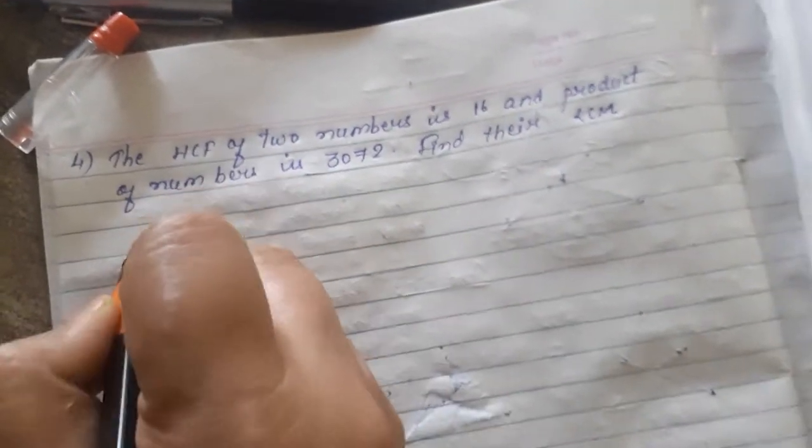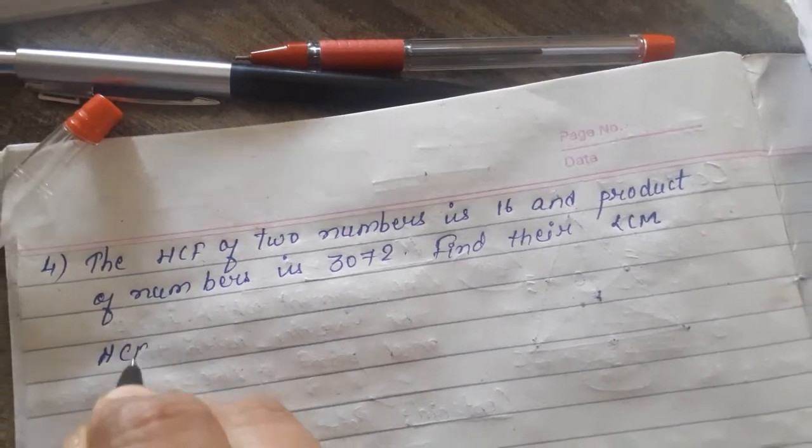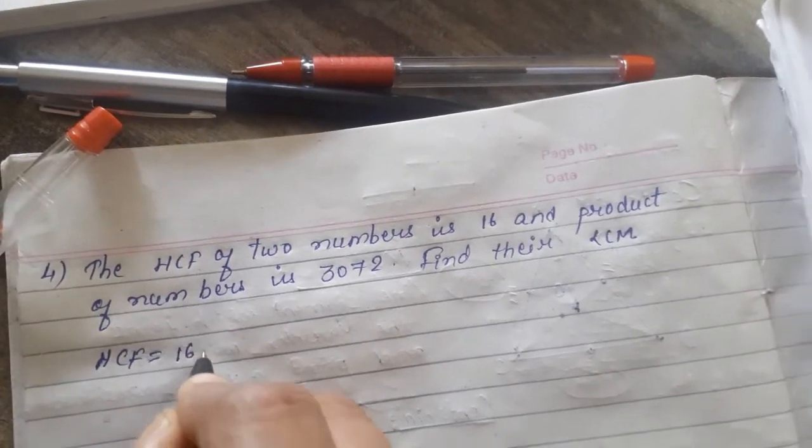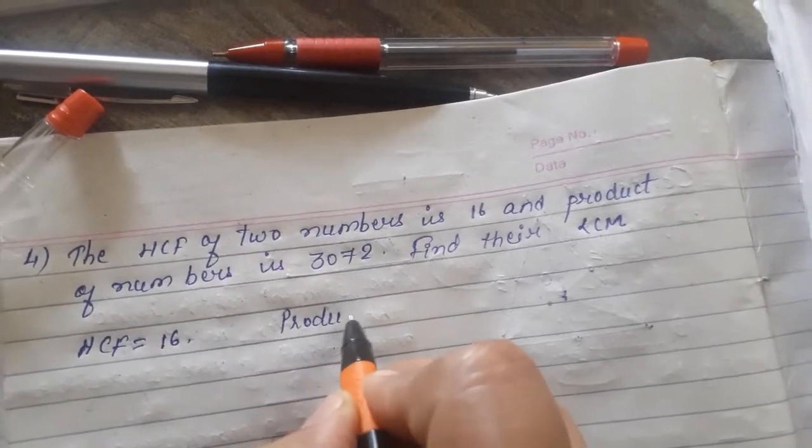So I should write whatever the given values are. HCF is equal to 16 and then product of numbers is 3072.